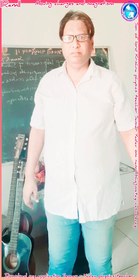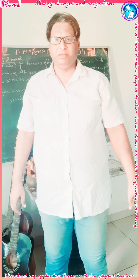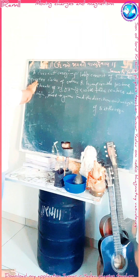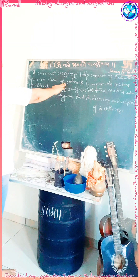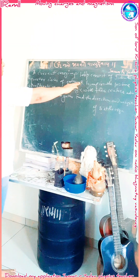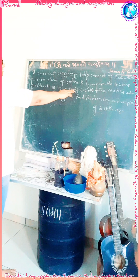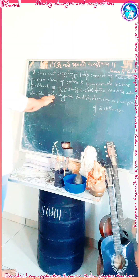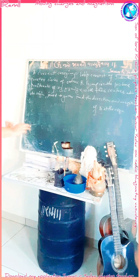Today in physics, we look at moving charges and magnetism. Here is a numerical: a current-carrying loop consists of three identical quarter circles of radius R lying in the positive quadrant of the x-y, y-z, and z-x planes, with their centers joined together. Find the direction and magnitude of the magnetic field B at the origin.